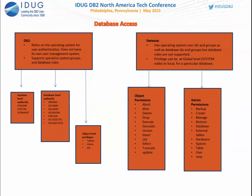For database access, DB2 relies only on the operating system for authentication. Netezza has two levels: first, OS-level authentication, then the database has its own user ID and password management. Privileges can be global (e.g., a global CREATE TABLE privilege lets a user create tables in any database on the appliance), database-level, or object-level. Netezza has two kinds of permissions: object permissions (let you use the appliance — gen stats, list, insert, delete, etc.) and admin permissions (administer the database — restore, backup, create database, etc.).